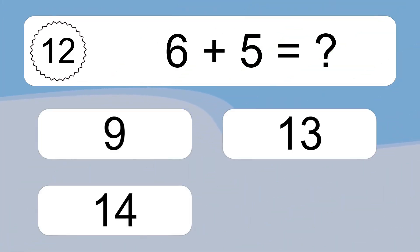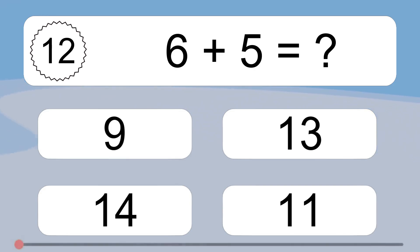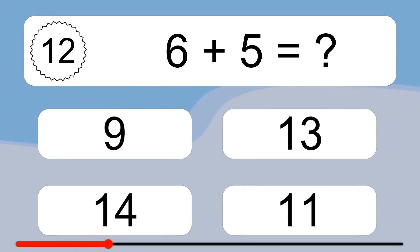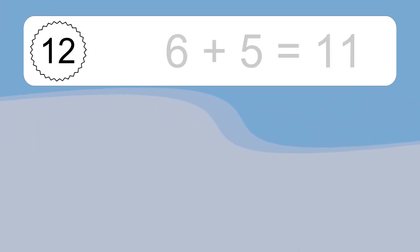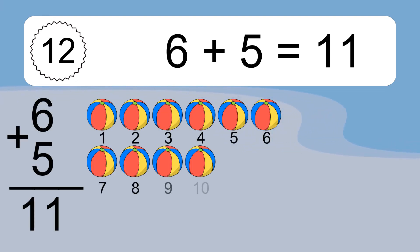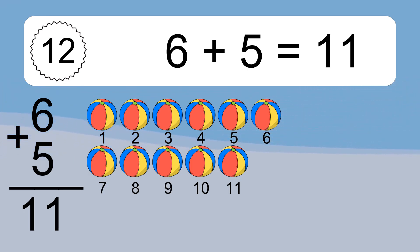6 plus 5 equals what? 6 plus 5 equals 11. Let's count it: 1, 2, 3, 4, 5, 6, 7, 8, 9, 10, 11.